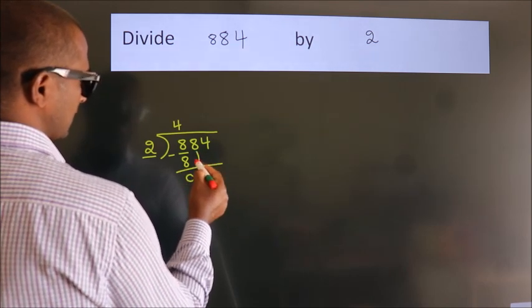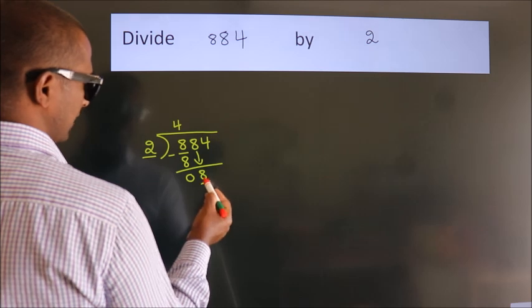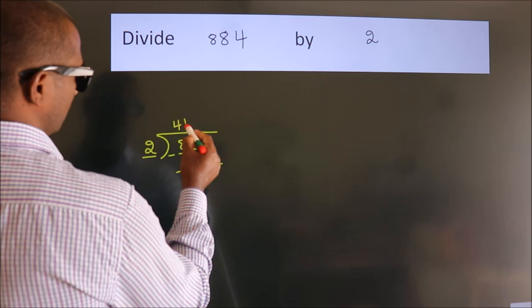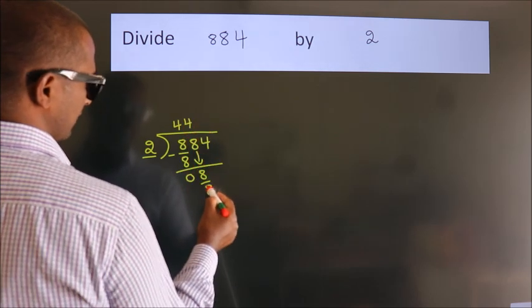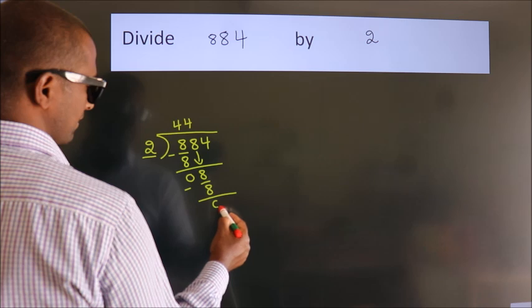After this, bring down the beside number. So, 8 down. 8. When do we get 8? In 2 table, 2 fours, 8. Now, we subtract. We get 0.